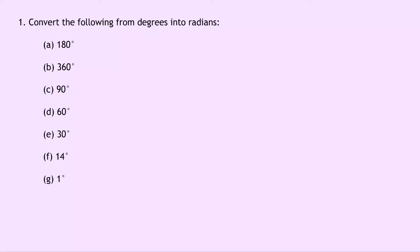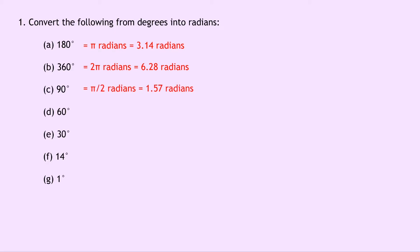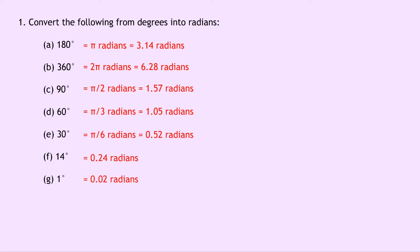Question one says to convert the following from degrees into radians. We have seven parts A through to G. Part A: 180 degrees is pi radians, which is the same as 3.14 radians. Part B: 360 degrees is 2 pi radians, the same as 6.28 radians — that's one complete revolution. Part C: 90 degrees is pi over 2 radians, or 1.57 radians. Part D: 60 degrees is pi over 3 radians, or 1.05 radians. Part E: 30 degrees is pi over 6 radians, or 0.52 radians. Part F: 14 degrees is 0.24 radians. Part G: 1 degree is 0.02 radians.